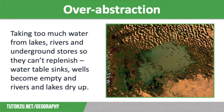Our fourth cause of water insecurity is over-abstraction. Over-abstraction means taking water from rivers, lakes or underground sources at such a rate that they cannot replenish. This leaves the water table sinking, wells becoming empty and rivers and lakes drying up. An example of this is Lake Chad in Africa, which has lost 90% of its water in recent decades due to over-abstraction for irrigation.